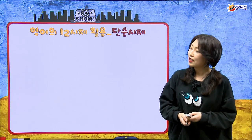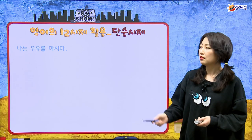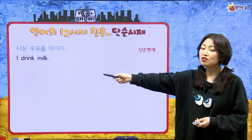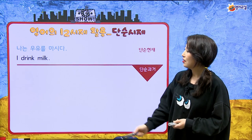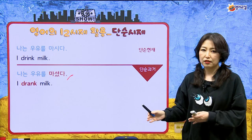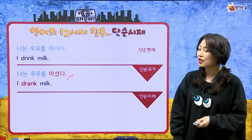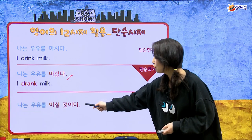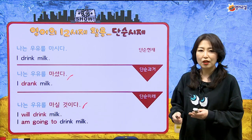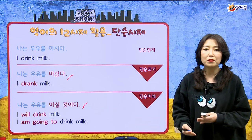예문으로 살펴볼게요. 단순 시제: 나는 우유를 마시다 — I drink milk (현재). She drinks milk처럼 3인칭 단수면 s가 붙어요. 나는 우유를 마셨다 — I drank milk (과거). drink의 3단 변화는 drink, drank, drunk이에요. 나는 우유를 마실 것이다 — I will drink milk (미래), 또는 I am going to drink milk로 바꿀 수 있어요.